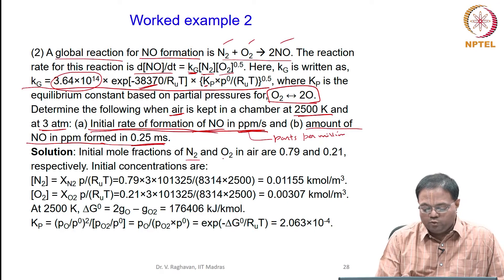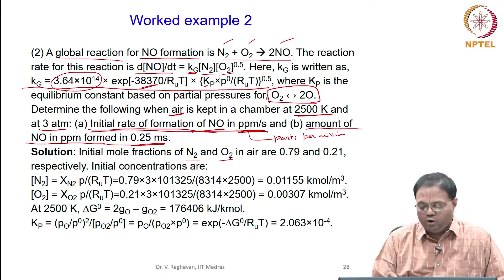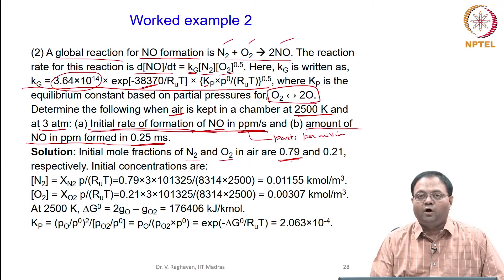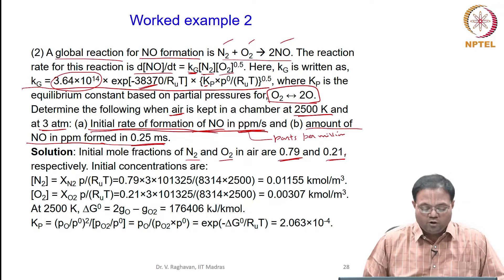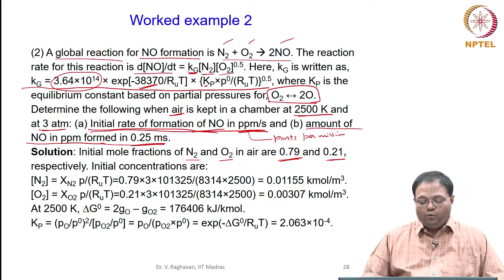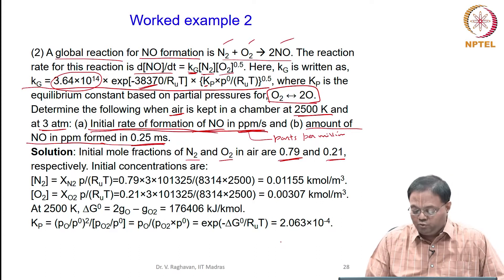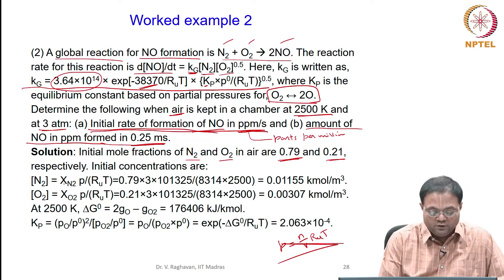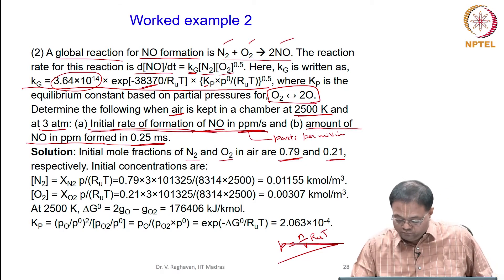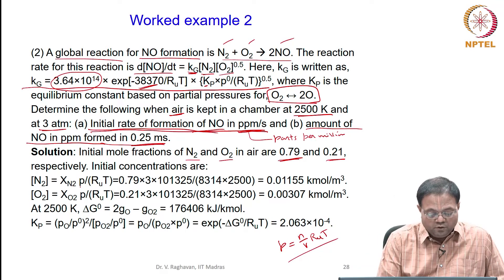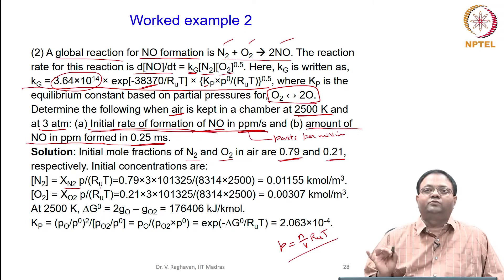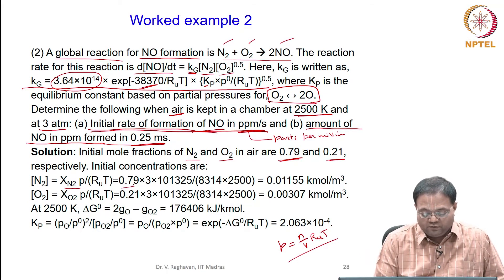For the solution: initial mole fractions of N₂ and O₂ in air are 0.79 and 0.21 respectively. Concentrations are calculated as mole fraction times partial pressure divided by RuT. The partial pressure of N₂ is 0.79 × 3 × 101,325 Pa divided by Ru (8314) at T = 2500 K, giving [N₂] = 0.01155 kmol/m³.